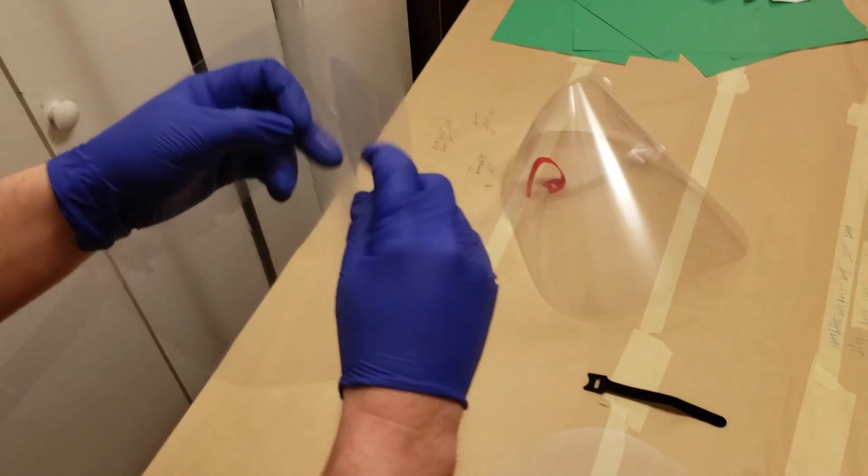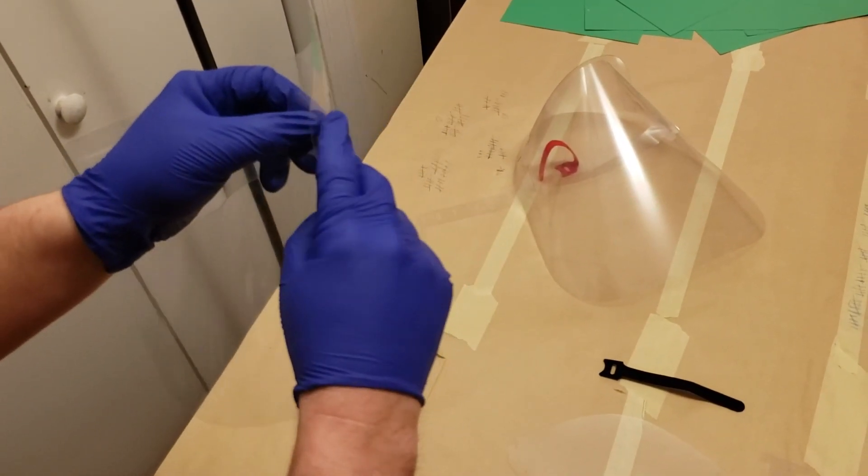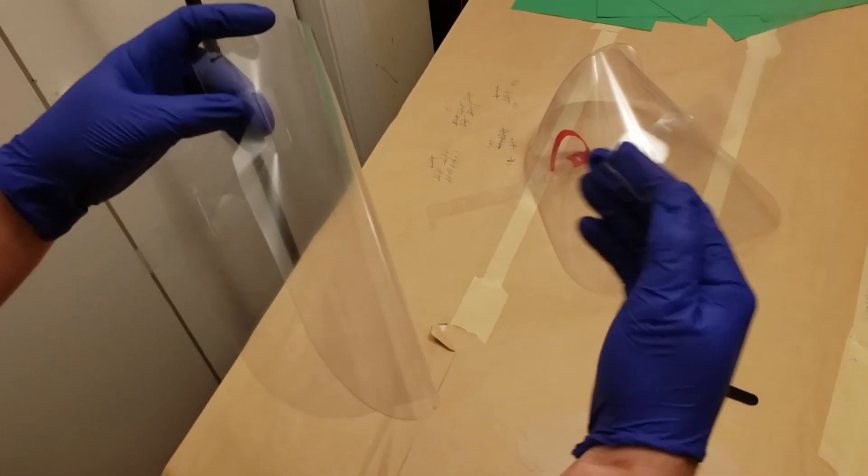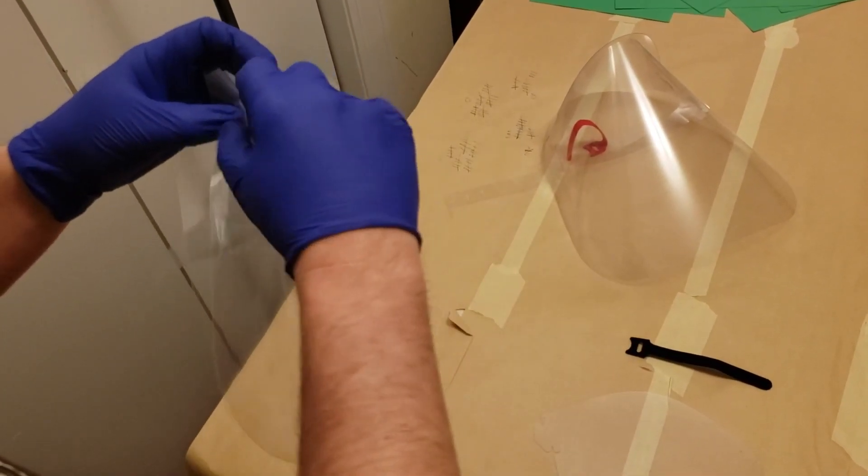And you take your back head strap and you just weave it through like that. Now come around to the other side, put that front head strap through just like on the other side. You take the back head strap, you weave it through.